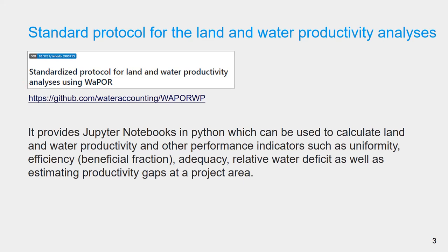VAPOR-based performance indicators can be calculated using Jupyter Notebooks in Python. To do the VAPOR-based analysis, the Water Accounting Group at IHE Delft has developed a standardized protocol which can be downloaded from the Water Accounting GitHub repository.